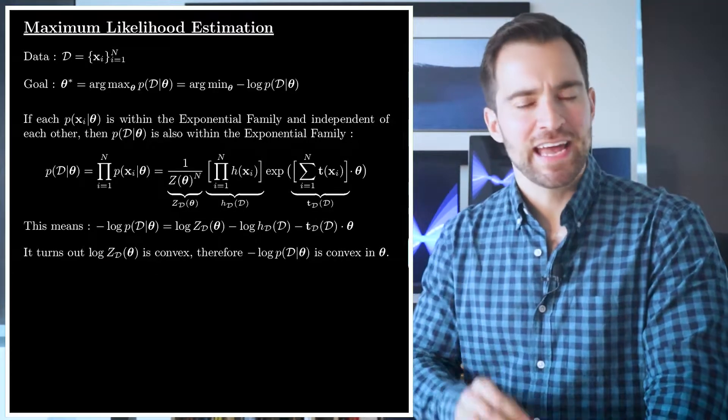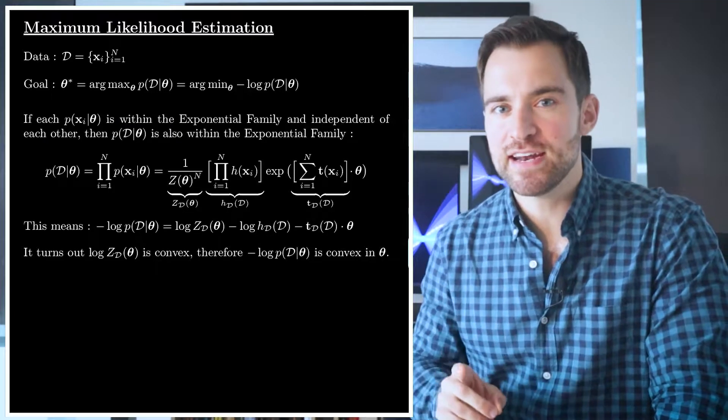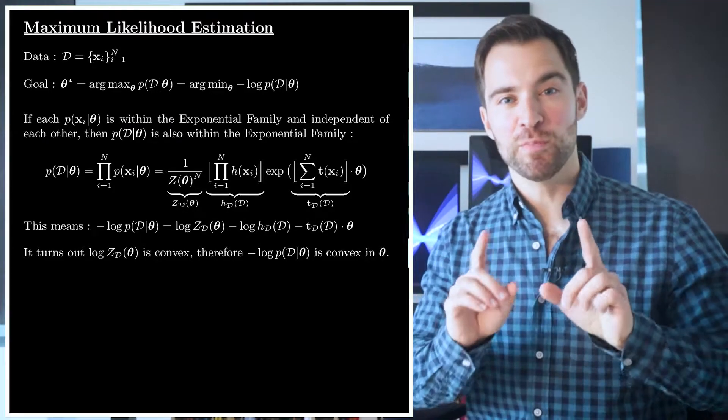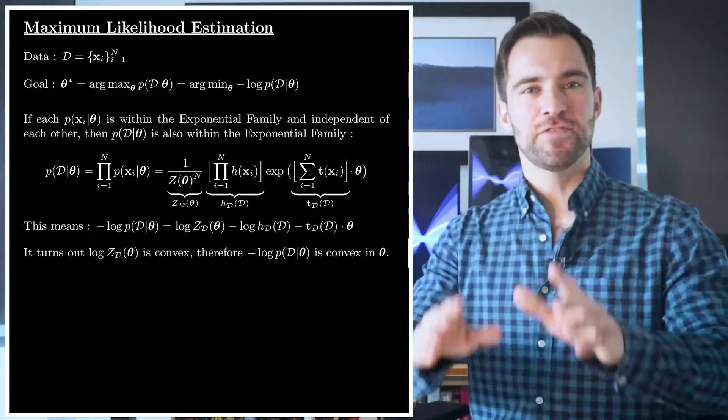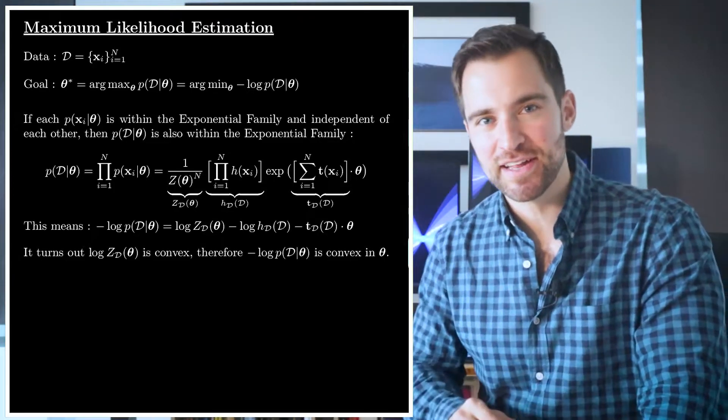That means there are no local minima, which means if we search until we find something that looks like a local minimum, we will be assured that it's in fact the global minimum. In other words, the moment we find a point where the gradient is zero, we can stop searching. We found the best answer there is. But I should make something clear. This doesn't mean there's only one θ that achieves that global minimum. There could be many, but we'll get back to that.